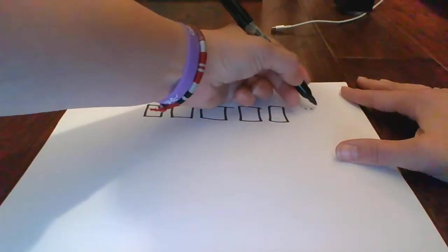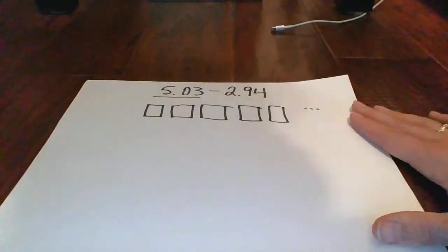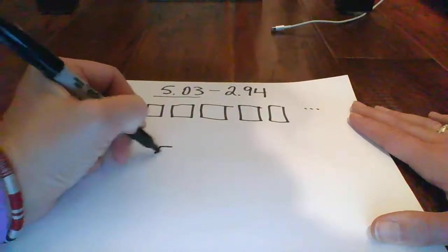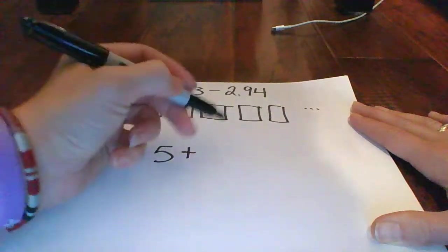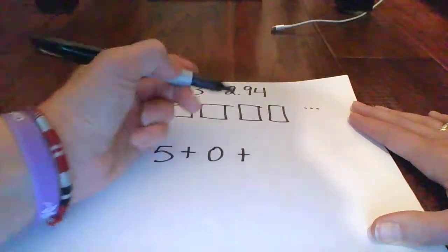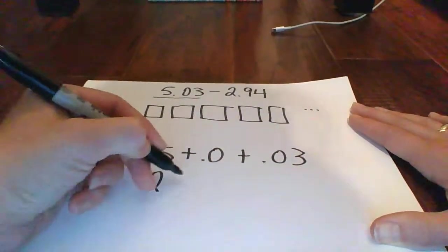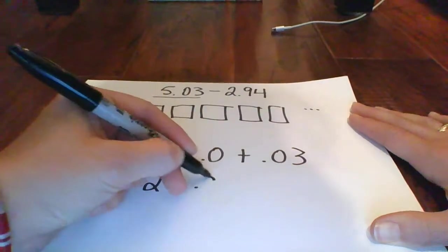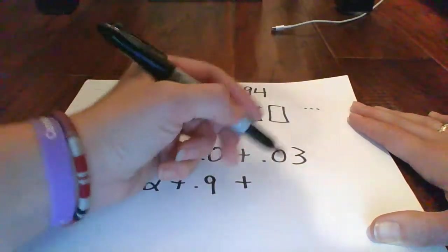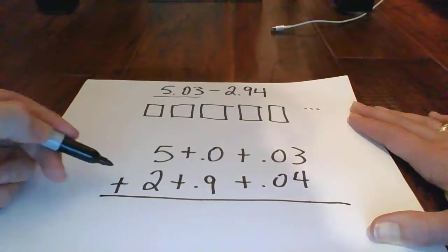That would just simply be $0.03 there. If I was going to break this down, it would be 5 wholes plus 0 tenths plus 3 hundredths, and then it would be 2 wholes plus 9 tenths plus 4 hundredths.